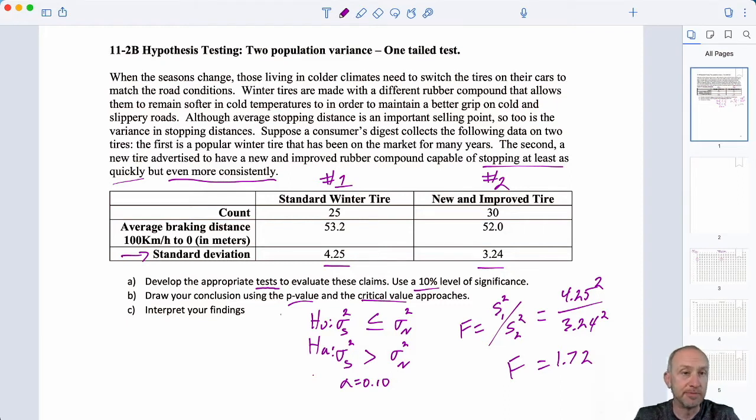Now, what are my degrees of freedom? So, here I'm looking at my numerator. I have 24 numerator degrees of freedom and I have 39 denominator degrees of freedom. So, that defines the specific distribution that I'm interested in.